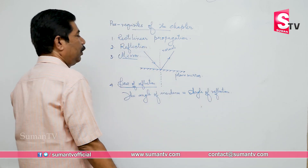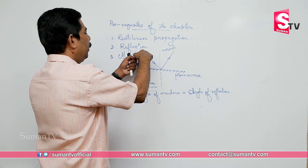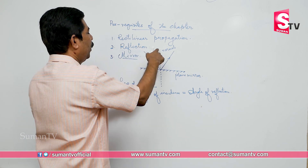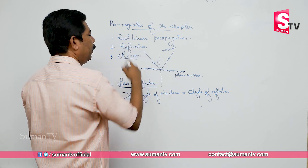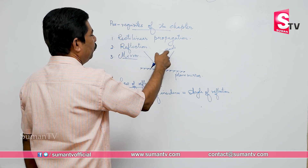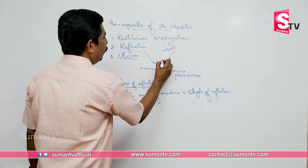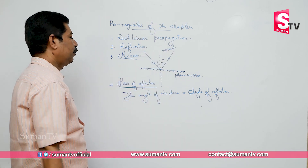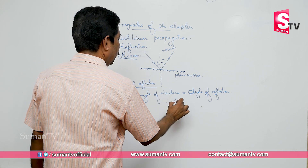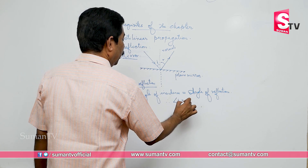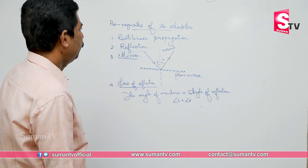You are very familiar with this law. The angle of incidence is the angle between the incident ray and the normal. The angle of reflection is the angle between the reflected ray and the normal, denoted by R. Therefore, angle I equals angle R.